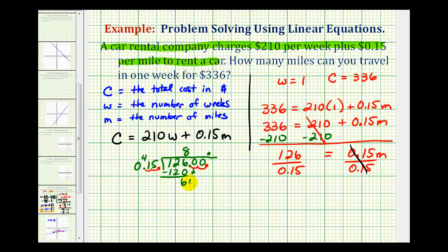Bring down the next digit. Now we want to know how many 15s there are in 60. That would be four. Four times 15 is exactly 60. Difference is zero. But we still have one more digit to use. Bring the zero down here. And there are zero 15s in zero. So we put a zero here. Zero times 15 is zero. And we subtract. Difference is zero. We've used all the digits.